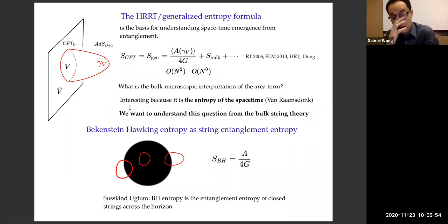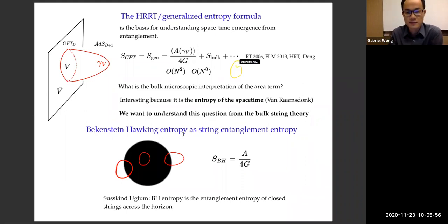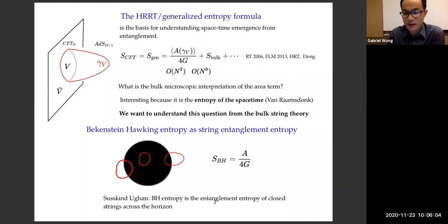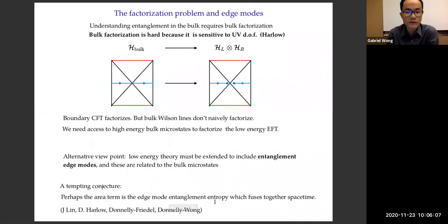Our main inspiration for thinking about this problem comes from Susskind-Ogburn. They propose that Bekenstein-Hawking entropy is the entanglement entropy of closed strings across the horizon.